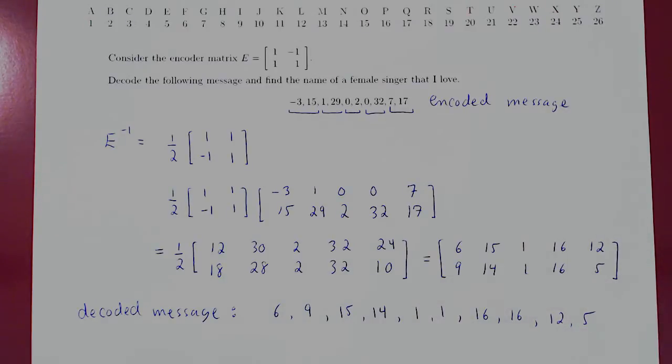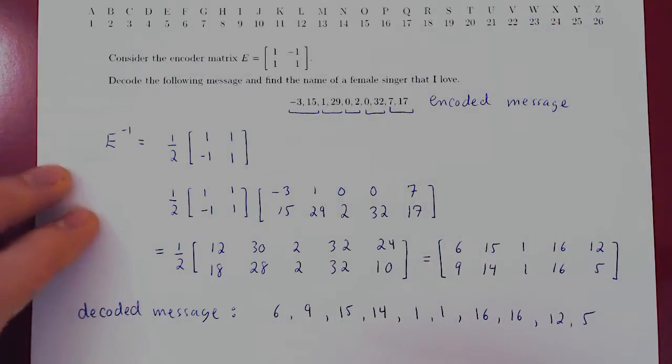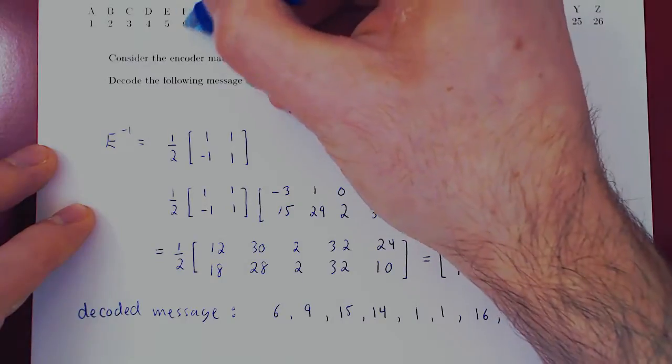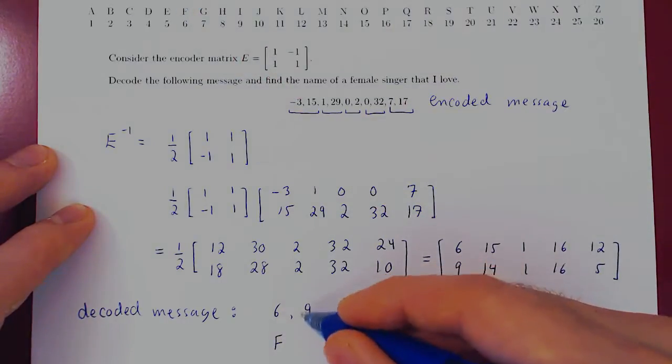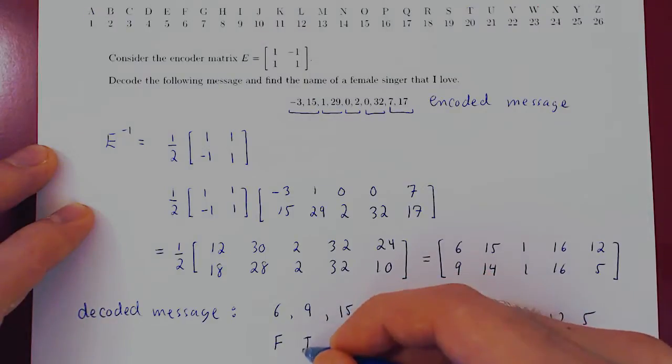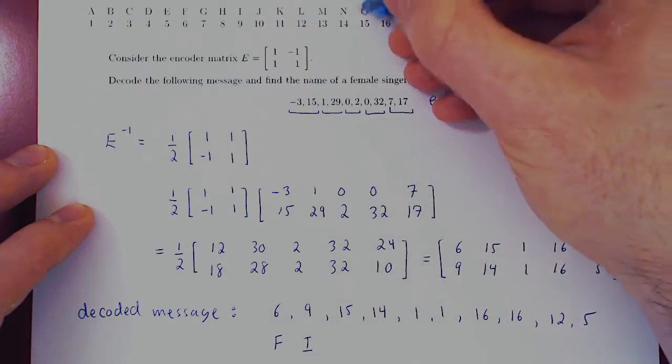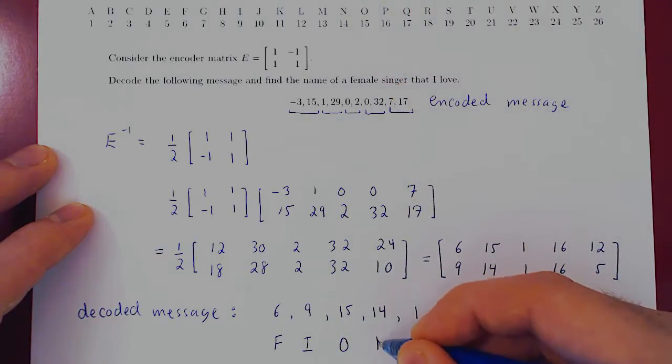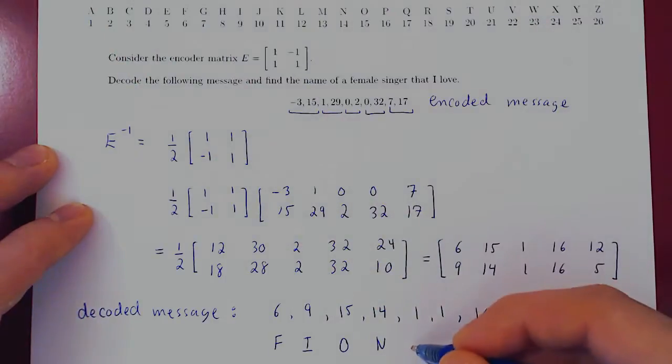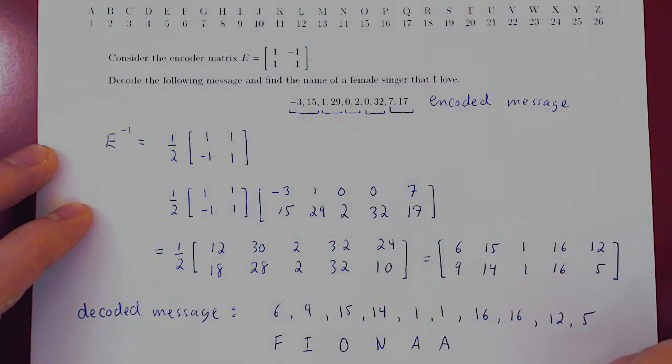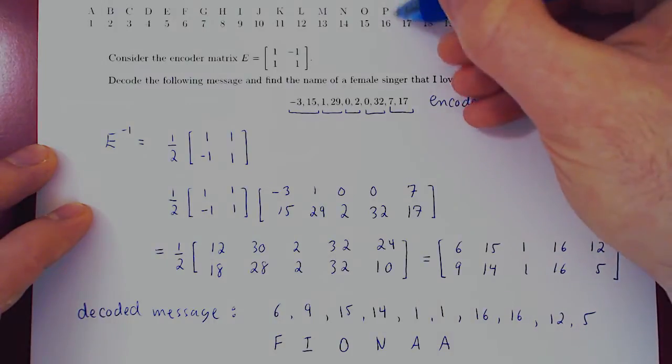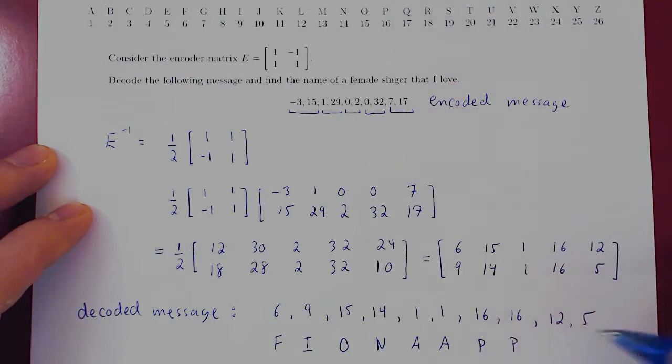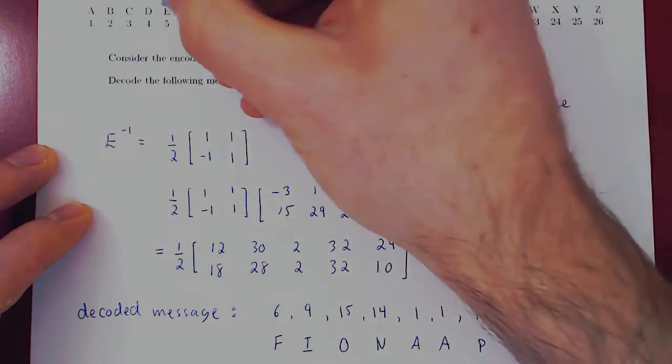All that remains is to translate back from the numerical message into the letter message. So let's translate. Number 6, letter F. Number 9, letter I. Number 15, letter O. Number 14, letter N. Number 1, obviously A. Number 1, A again. Number 16 twice, PP. Number 12, L. And number E, 5.